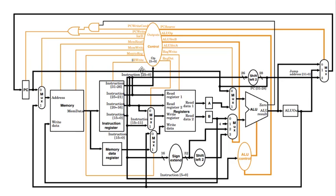The controller has become much more complicated because we need to control additional registers and lines we didn't have before. It's a bit more complex, but we actually have fewer pieces overall — notice we only have one ALU now. We used to have another adder and a separate adder for PC incrementation.